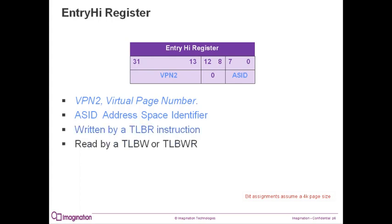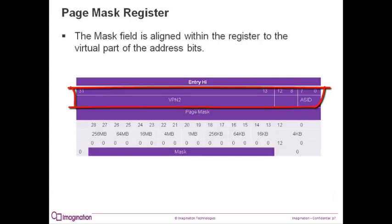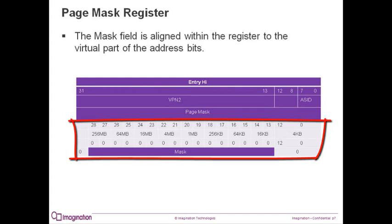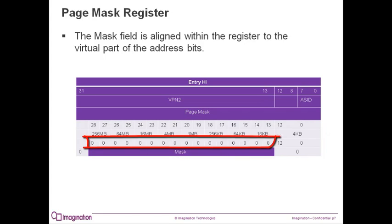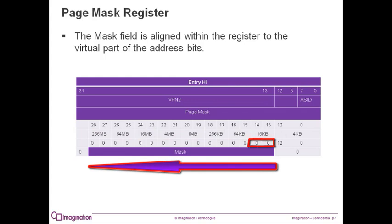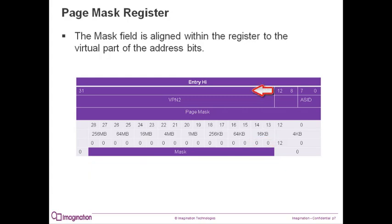Entry high is read into the TLB entry using the TLB write or TLB write random instructions. I have overlaid the entry high register with the page mask register so you can see the effect the page mask register has on the VPN2 address. The page mask register allows TLB entries to map pages larger than 4K. The 1 bits in the page mask have the effect of causing the corresponding bit of the virtual address to be ignored when matching the TLB entry. Instead, the bit is carried unchanged to the resulting physical address, effectively increasing the page size by a power of 4 for each mask bit up to 256 megabytes. Bits must be filled in from right to left and always in pairs. Note the odd-even page selection bit also moves 2 bits with each mask position.